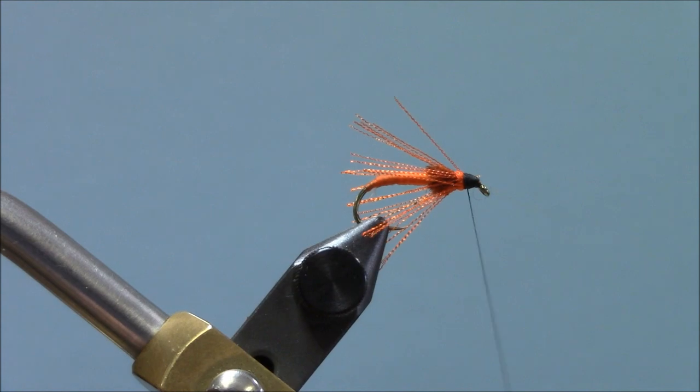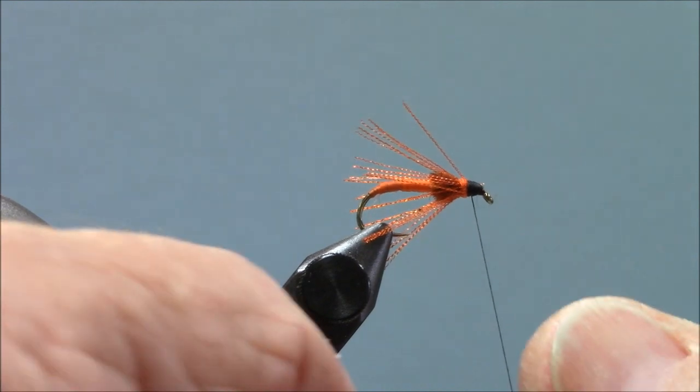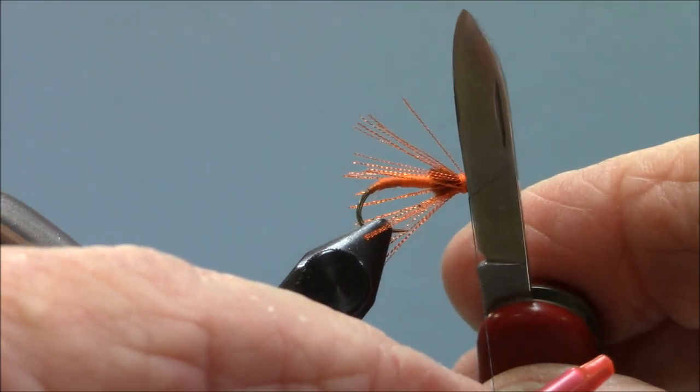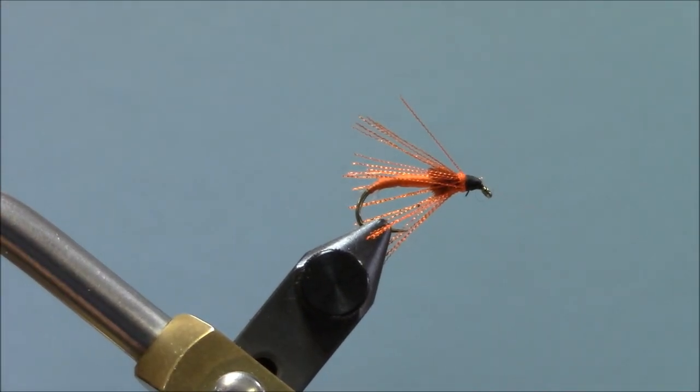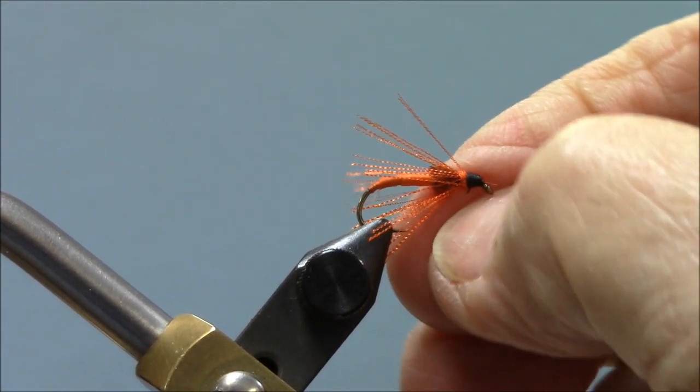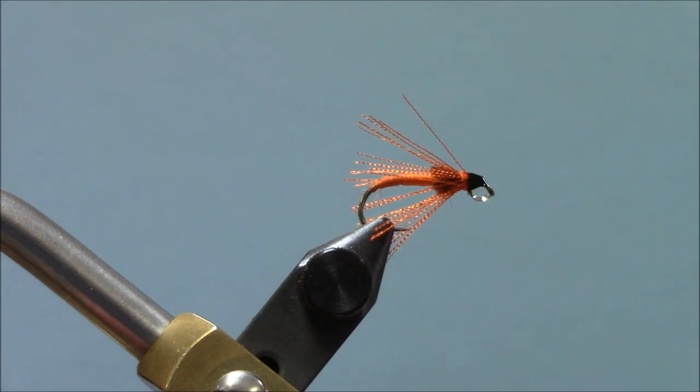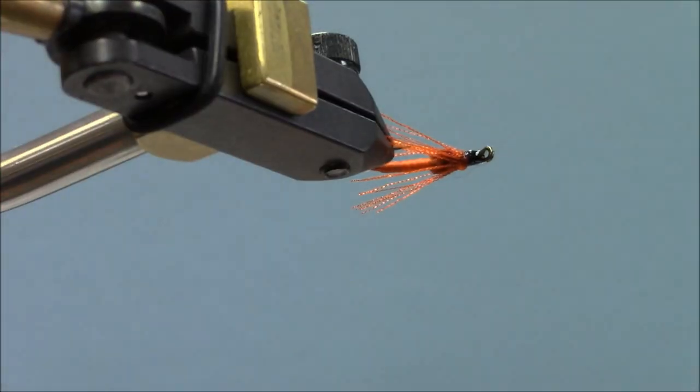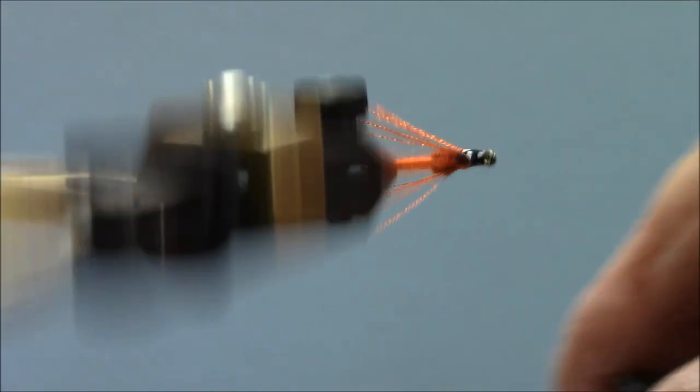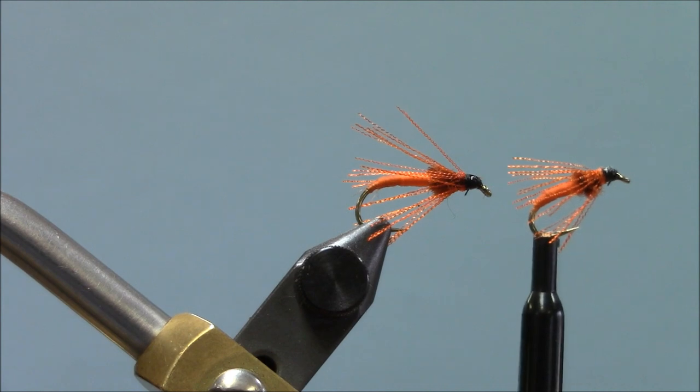This is one fly that—it's a pretty little fly, and it seems to me that I need maybe to use some head cement on this just so it gives it a little bit more shine. It's not absolutely necessary, especially if you're going to fish it, but I like a little bit of head cement. Oh, I got way too much.